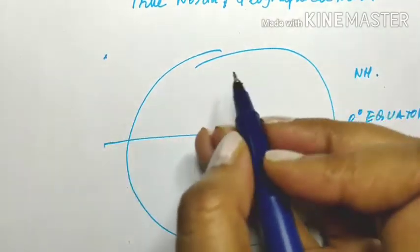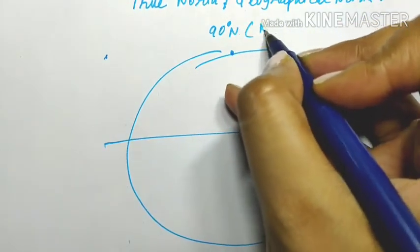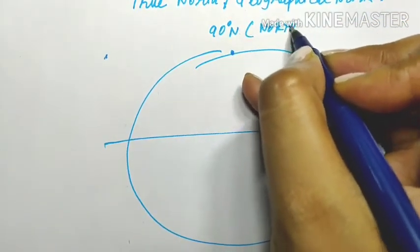In the northern hemisphere, the point at 90 degrees north is also known as the north pole.